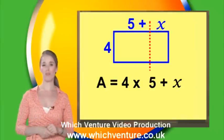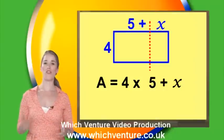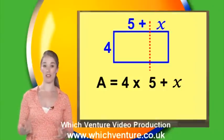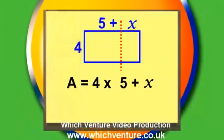How do we write this properly in algebra? We need to show that the 5 plus x part is one expression. If we put brackets around it like this, then we can see it is an expression.